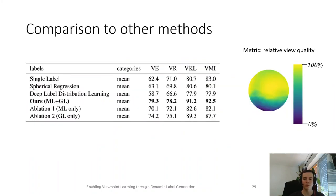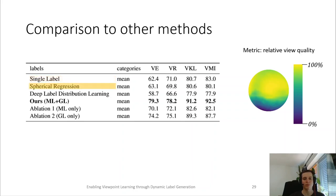We also compare our dynamic label generation to other methods to resolve label ambiguity. We measure the quality by considering the relative view quality of the view quality distribution of the current model. Here we compare to the single label approach, which does not resolve label ambiguity. We also compare to the spherical regression, which is a method to resolve axisymmetric label ambiguity.